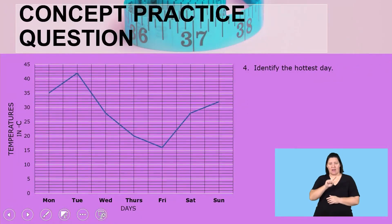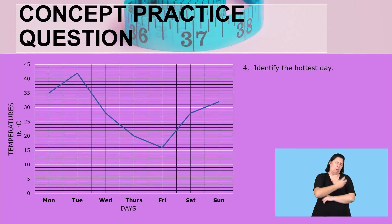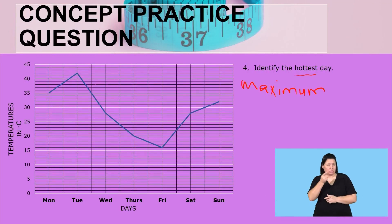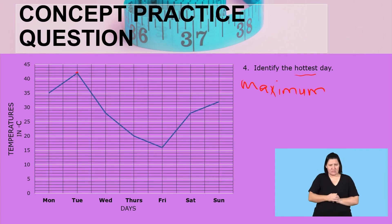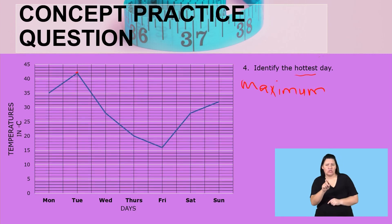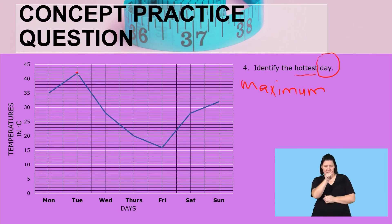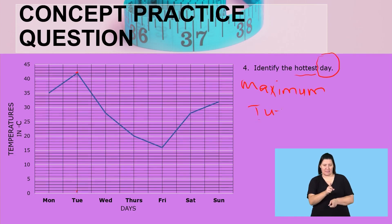Let us continue: identify the hottest day. The hottest day will be the one showing the maximum temperature, which is the highest value in the graph. If you look at the graph, the highest point is this one. But the question is about the day, not the temperature. Looking at this point, the highest temperature was on Tuesday. Therefore, your answer is Tuesday.